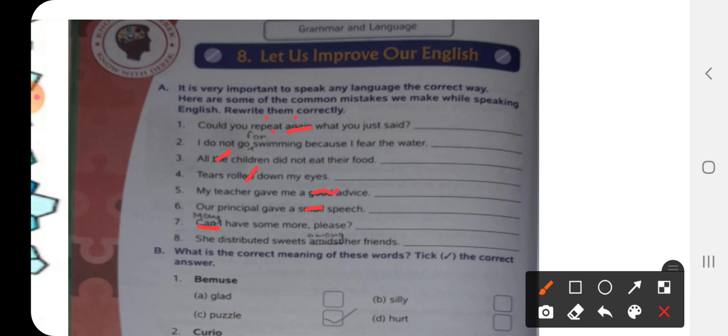Now the last one, number eight. She distributed sweets amidst her friends. Among is a better word than amidst. So what we can do is we can omit this amidst and we can write among.